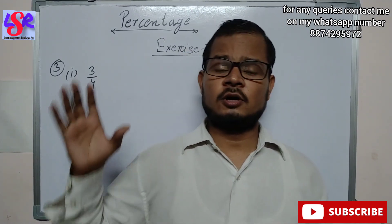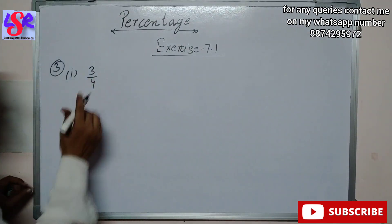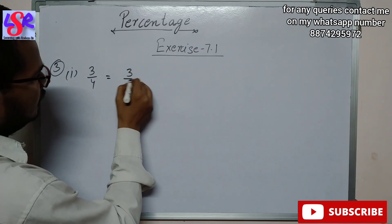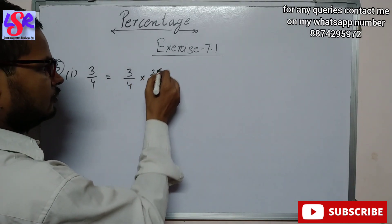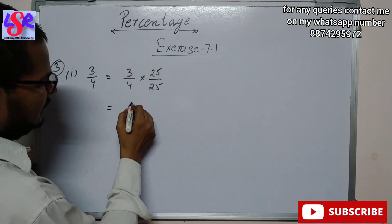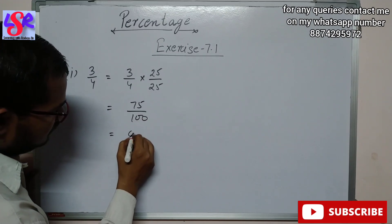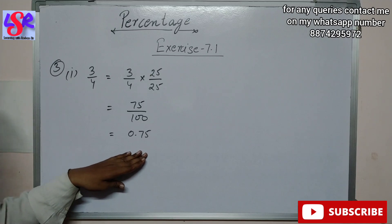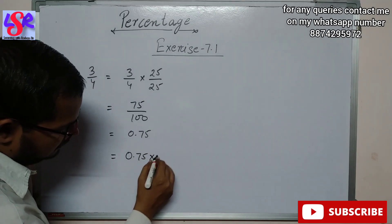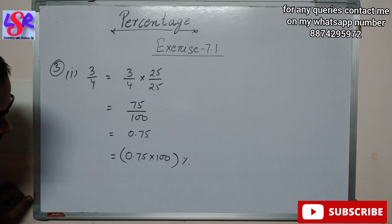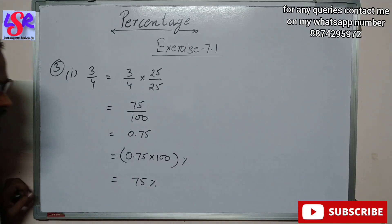Now let's see Question 3. Here we have to convert the number first into fraction form, then into percentage. We are given 3 upon 4. Since 4 into 25 is 100, we multiply 25 in both numerator and denominator. So 3 into 25 is 75 upon 4 into 25 is 100, giving 0.75 as a decimal. Now to convert to percentage, we multiply by 100: 0.75 into 100 is 75% as the answer.